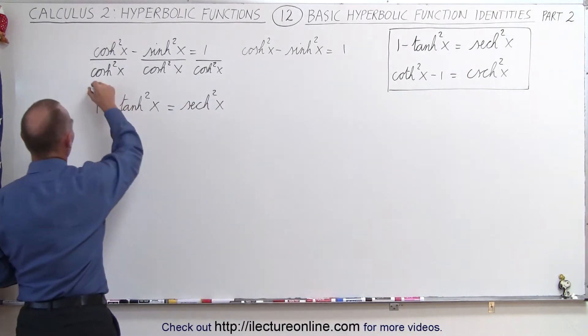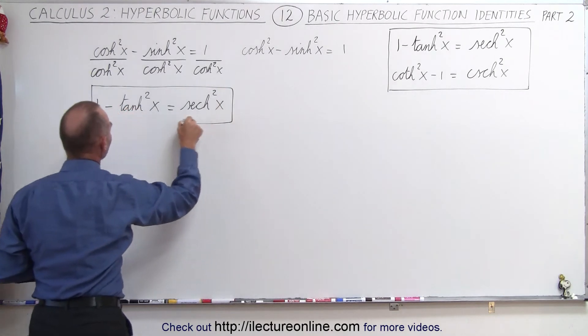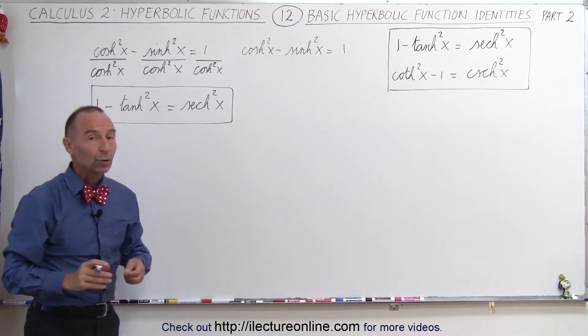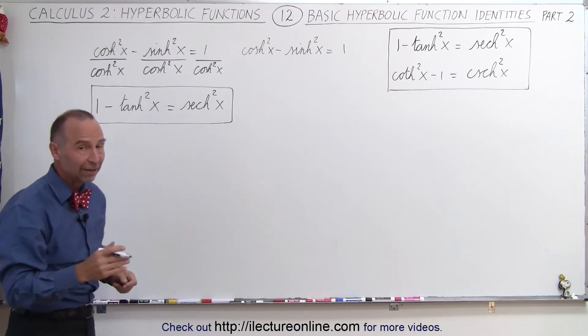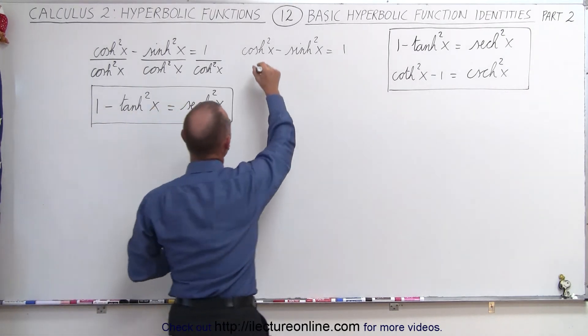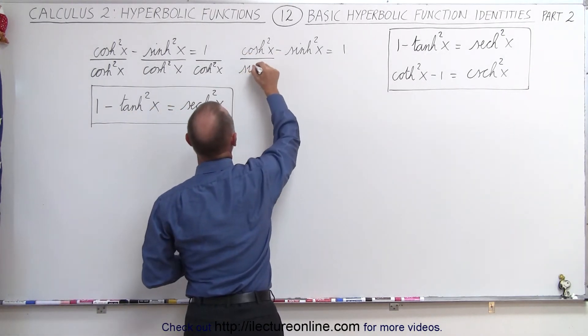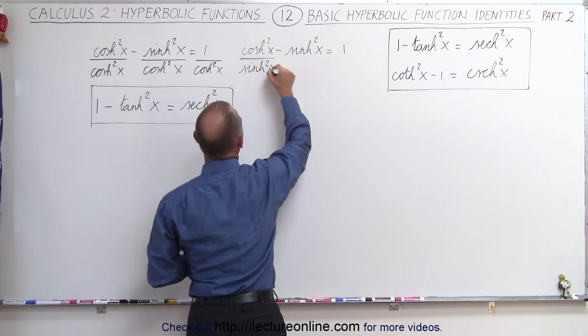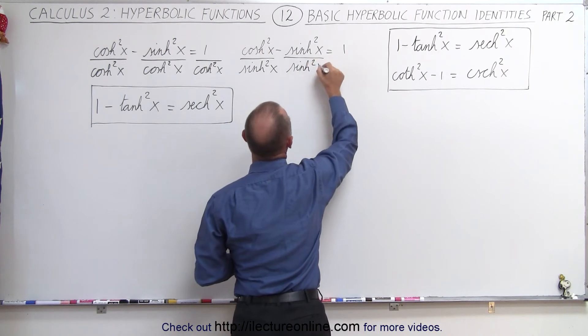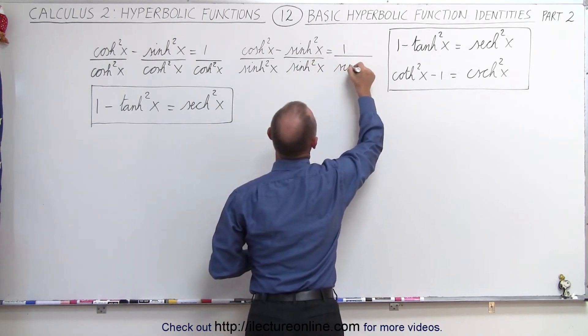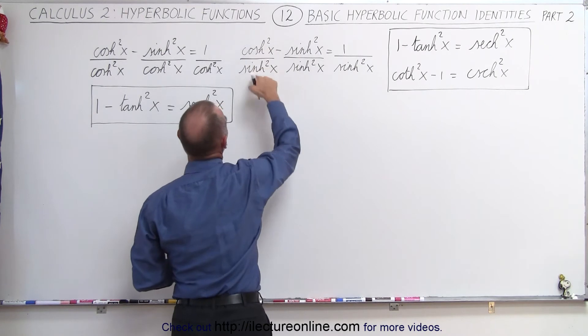Now, we do it again, but instead of dividing everything by the hyperbolic cosine, we'll divide everything by the hyperbolic sine. So when we do that, that's the hyperbolic sine squared. And here again, hyperbolic sine squared and hyperbolic sine squared of x. When we do that,